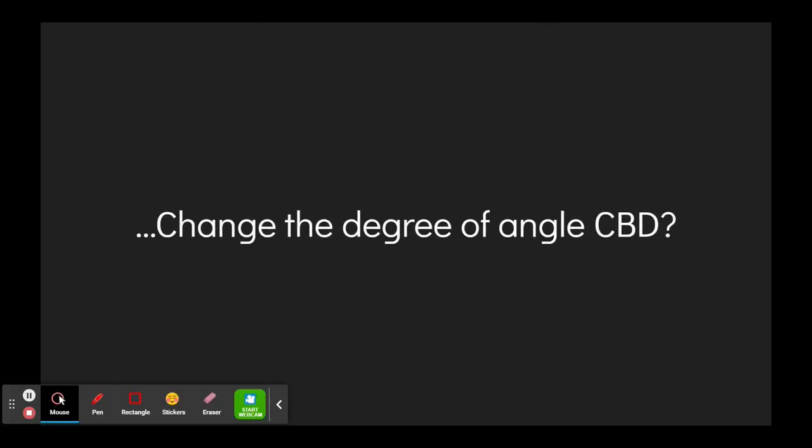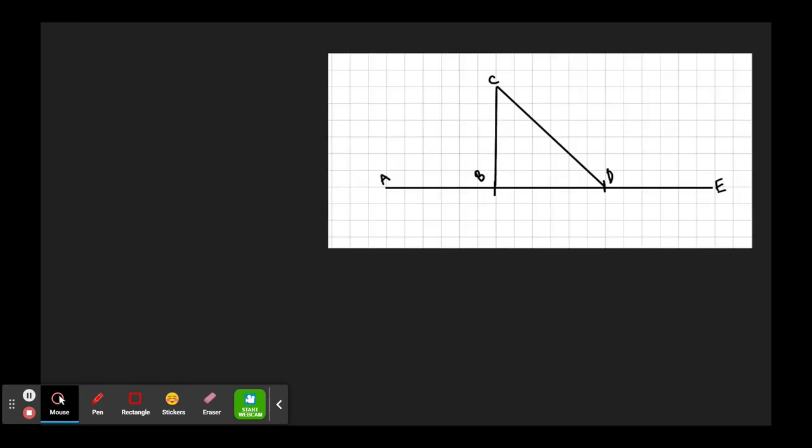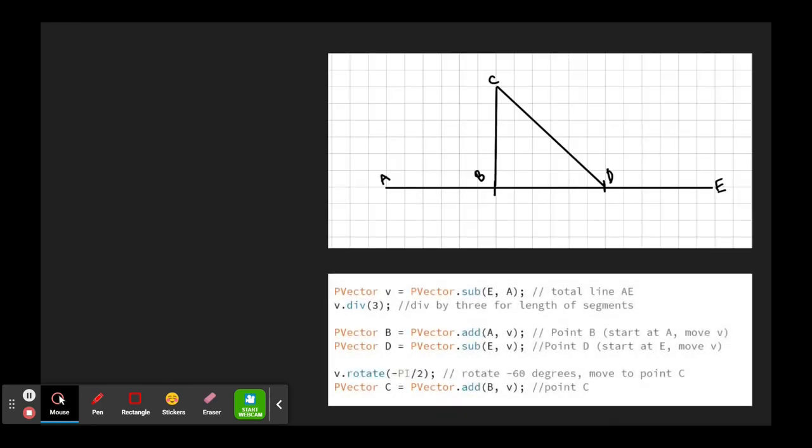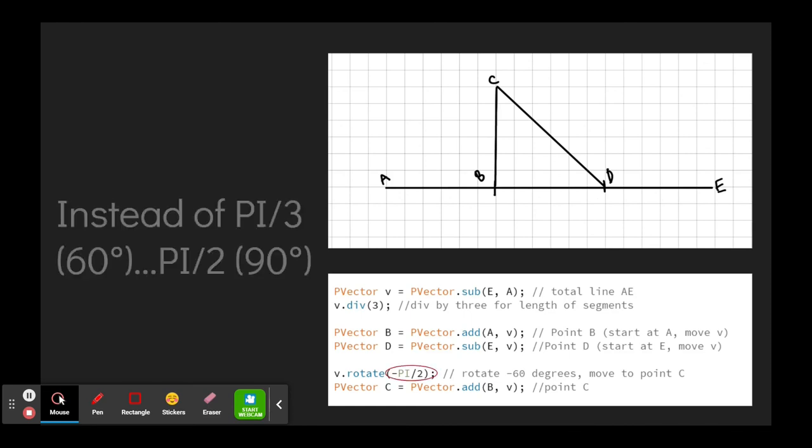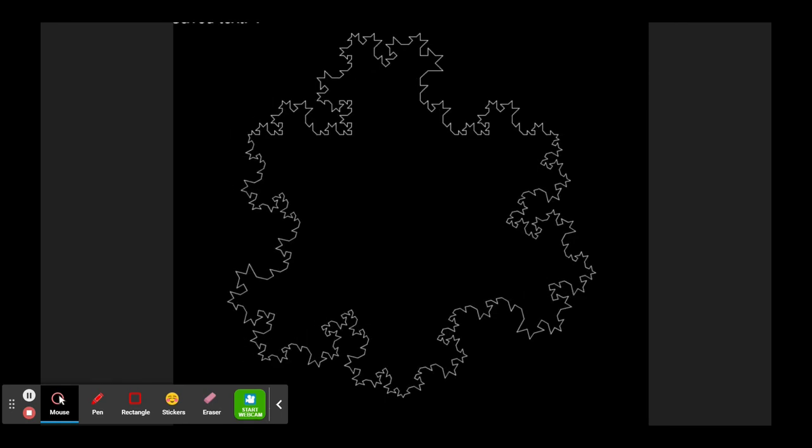What if we change the angle of CBD to 90 degrees? This code here controls the angle, and instead of pi by 3, let's change it to pi by 2. This gives us this funky shape, and you can see the iterations here in the gif.